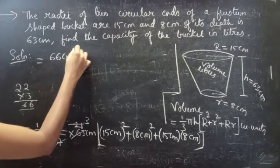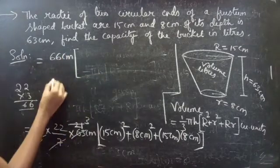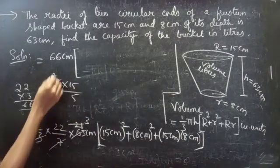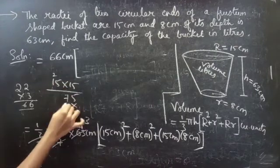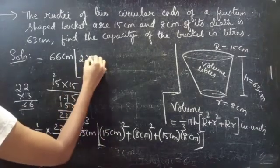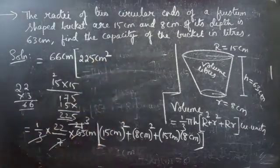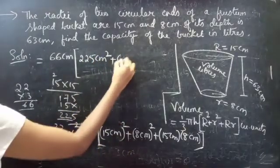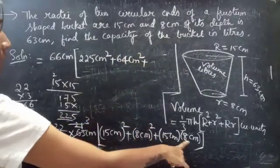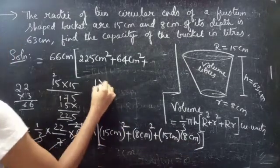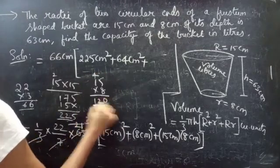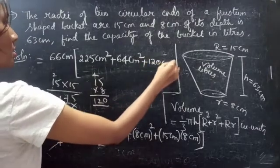Simplifying: 1/3 × 22/7 × 63 gives us 66. So we have 66 centimeter × (15 × 15 + 8 × 8 + 15 × 8). Now: 15² = 225 centimeter², 8² = 64 centimeter², and 15 × 8 = 120 centimeter².